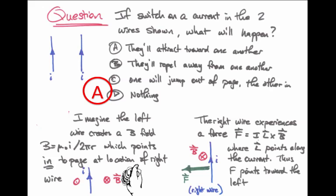Point your fingers straight up, curl them into the page to follow B, and you'll find that your thumb points to the left for that right-hand wire. That means it's attracted to the left-hand wire.